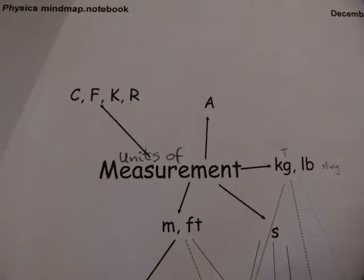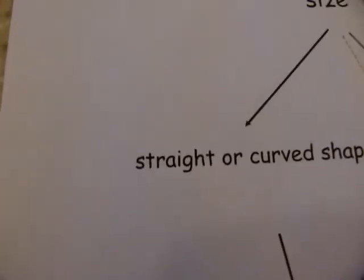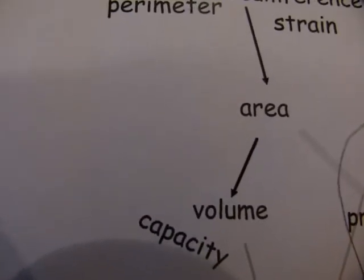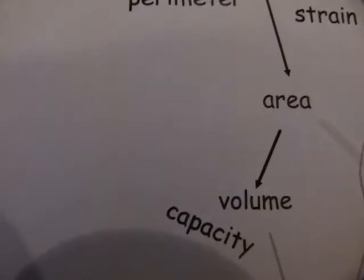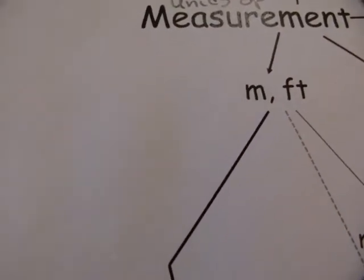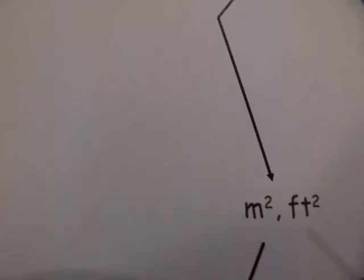Matter has size and it can be straight or curved in shape. Matter doesn't exist in just one dimension — it exists in two dimensions, and its two-dimensional extent is called area. It also exists in three dimensions, and that's called volume or capacity. Area and volume are consequently related to units of length: square meters, square feet, square kilometers, square inches, cubic meters, cubic inches, cubic feet, and liters and gallons for capacity.